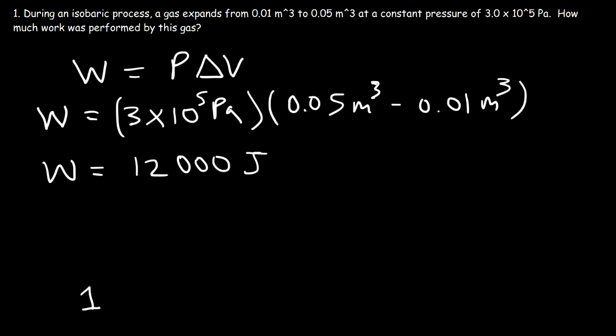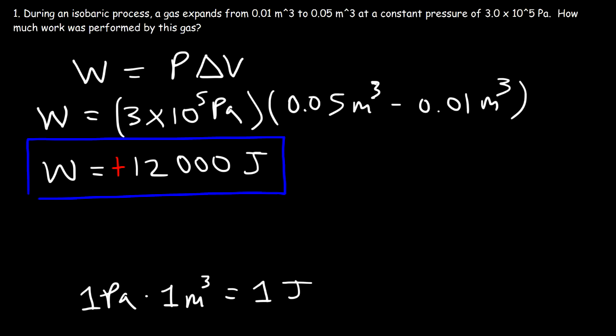You need to know that 1 pascal times 1 cubic meter is equal to a joule. The work is positive because the gas expanded, so work is being done by the system, not on the system. If the gas was being compressed, work would be done on the system and W would be negative. But because work is being done by the system, W is positive.